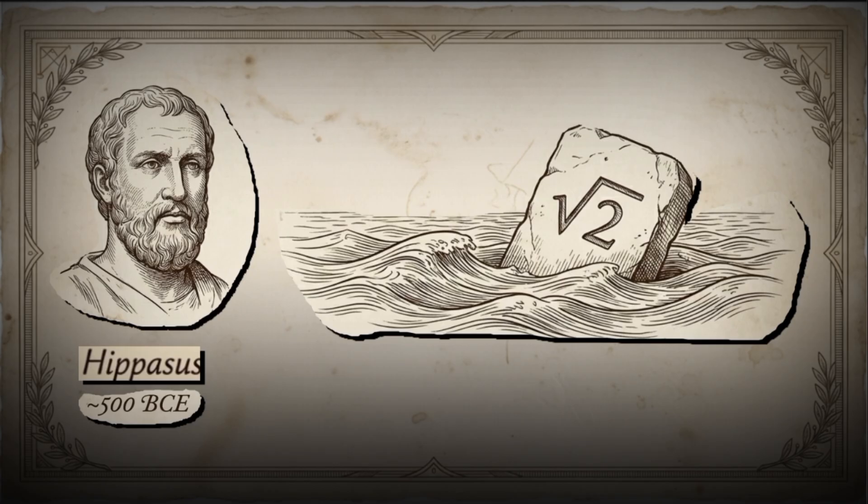Sadly, the Pythagorean school revered integers as sacred and considered Hippasus a traitor for discovering irrational numbers. According to legend, they drowned him in the Aegean Sea.